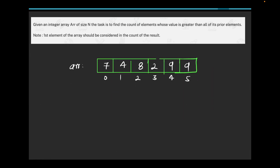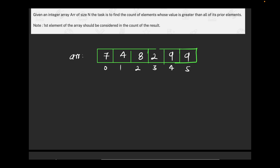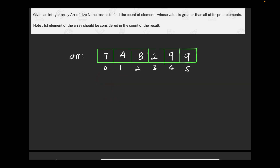Let's check what today's question is. We are given an array of size N and we need to count the elements whose value is greater than all of its prior elements. For example, if you consider the 8, it is greater than all the elements towards its left, so we will increment the counter by one.